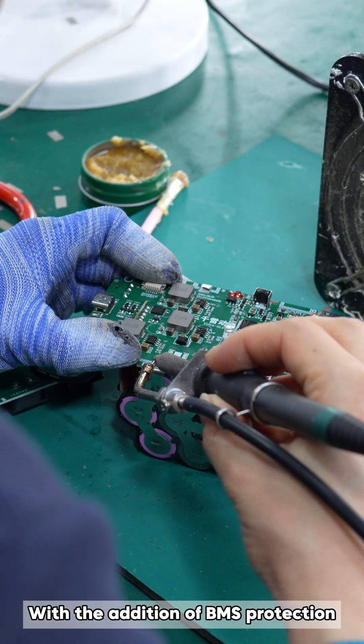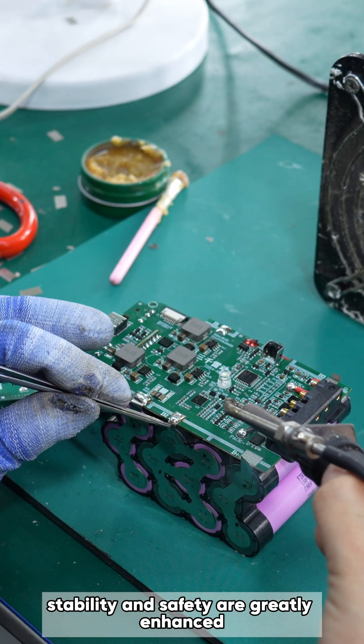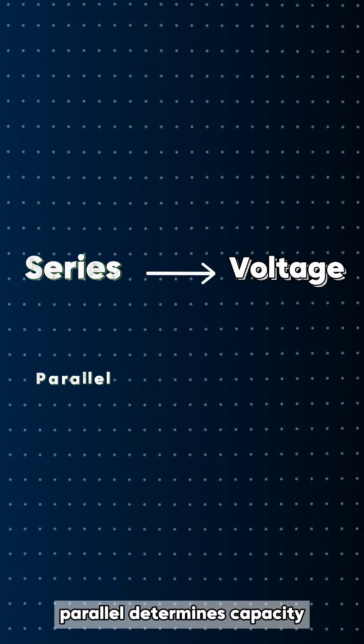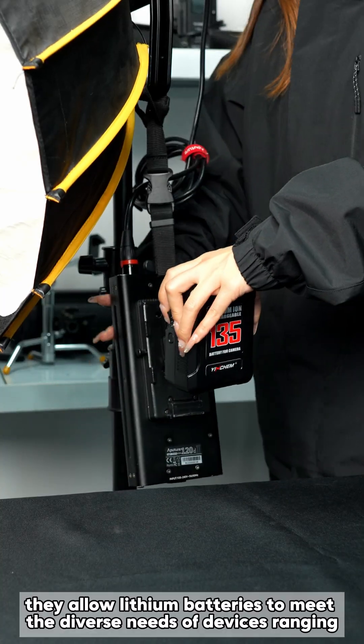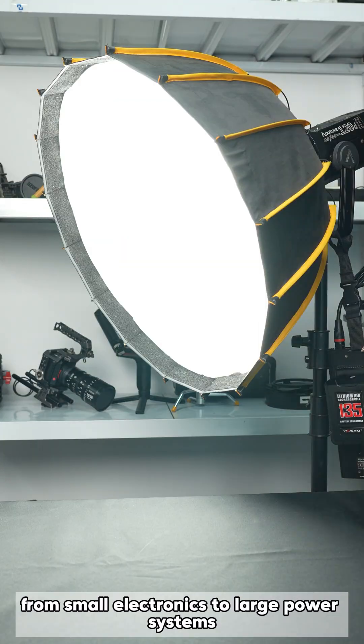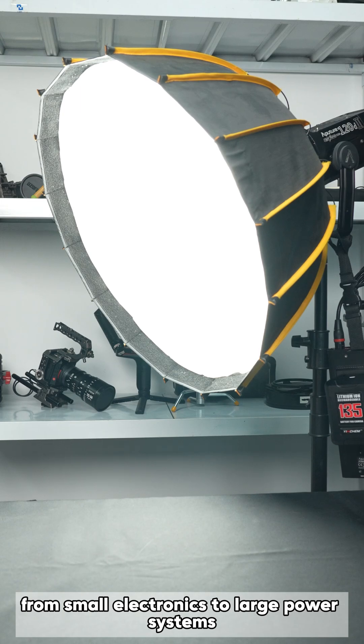With the addition of BMS protection, stability and safety are greatly enhanced. In simple terms, series determines voltage, parallel determines capacity, and together they allow lithium batteries to meet the diverse needs of devices ranging from small electronics to large power systems.